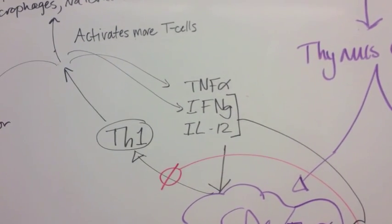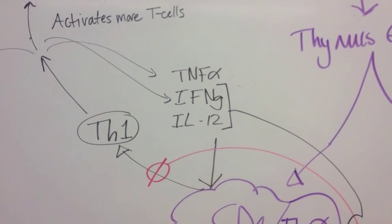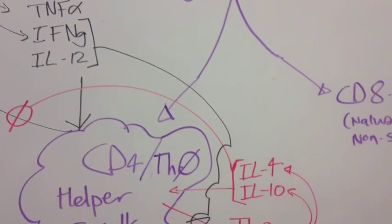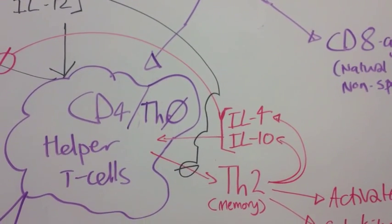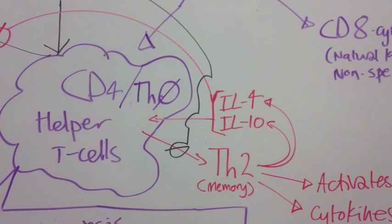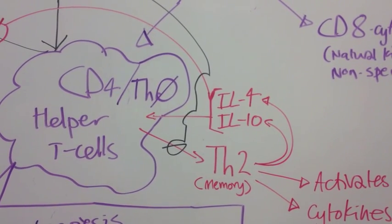When there is interferon gamma and interleukin-12, these have a dampening effect on the ability for TH0 to differentiate into TH2.